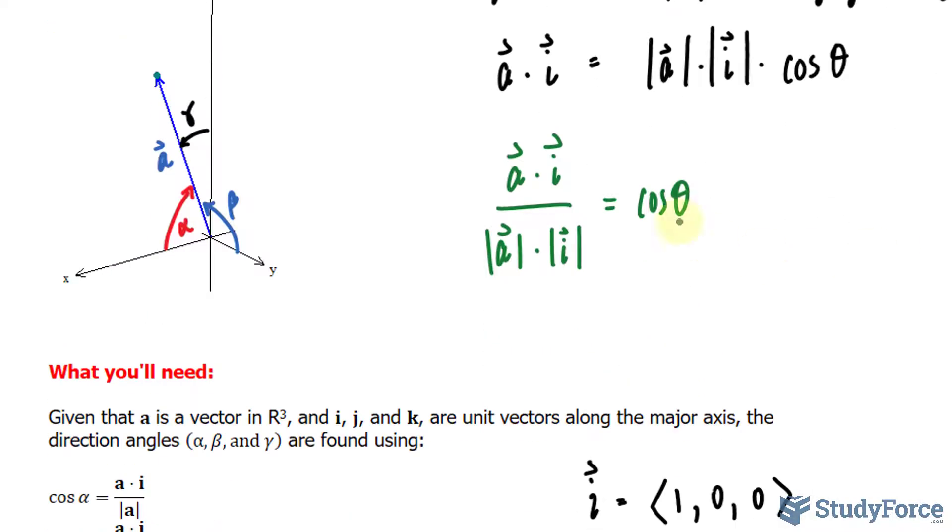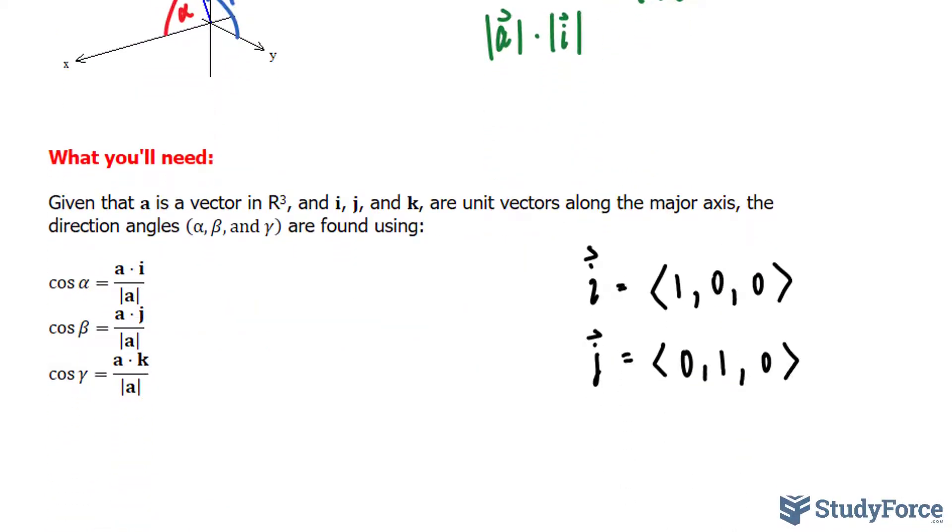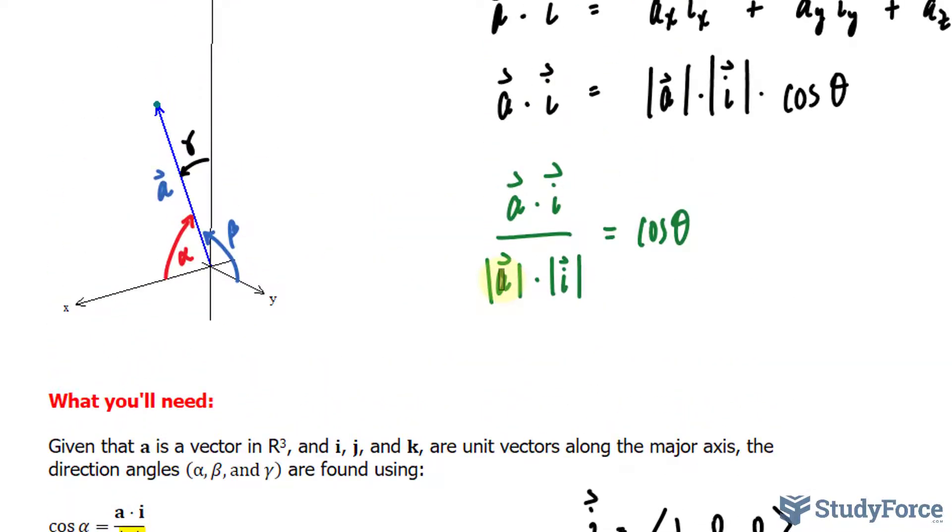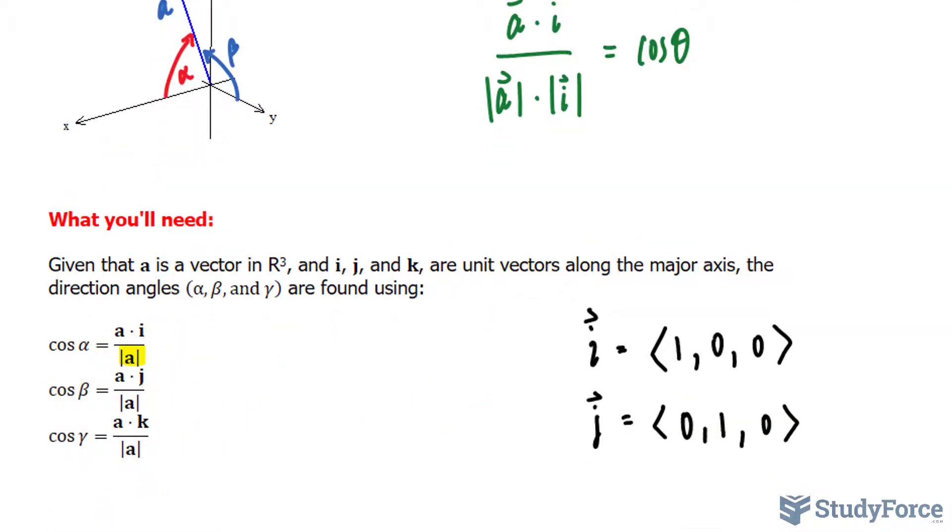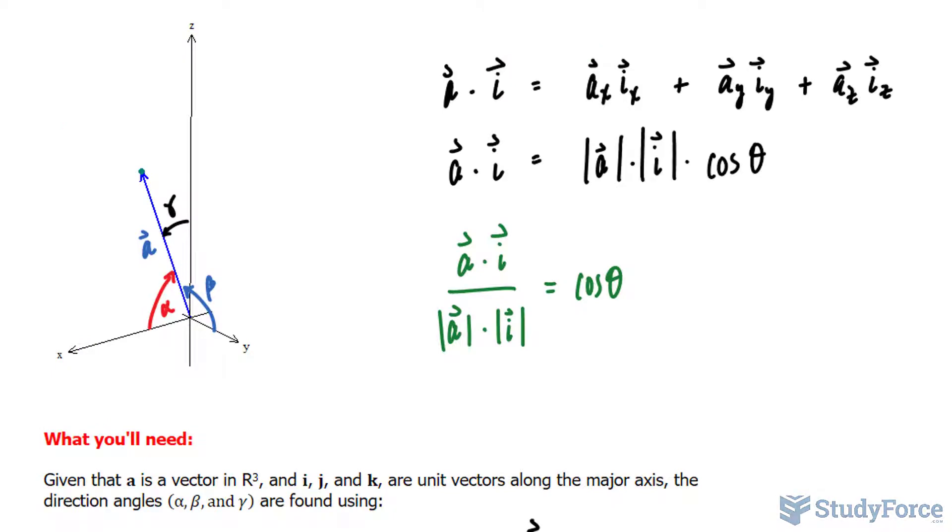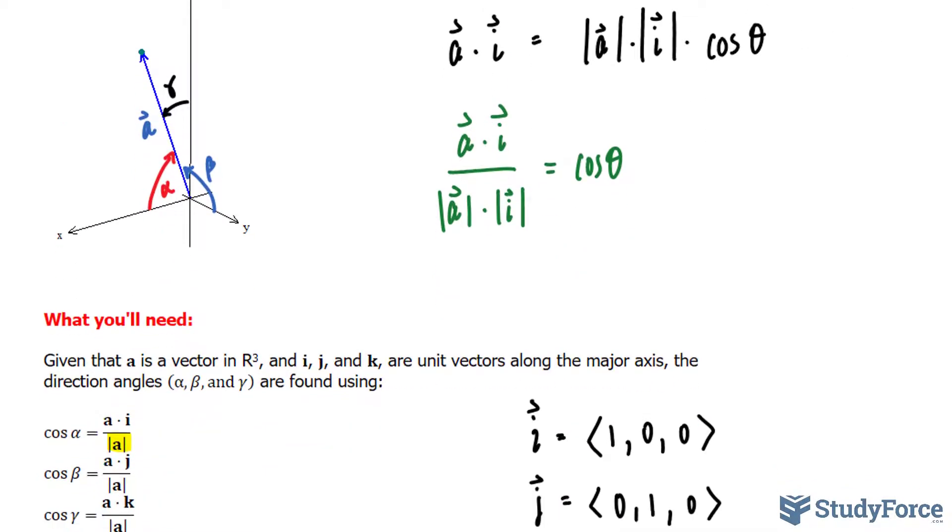Notice the similarity between what we have here and what's shown underneath, except the denominator here is the magnitude of a only. The reason for that is if you multiply the magnitude of these two vectors, you end up with simply the magnitude of vector a. So there's no need to write that down, and that's why it's simplified. I'm now ready to show you how to find alpha, beta, and gamma.